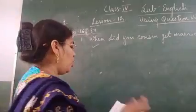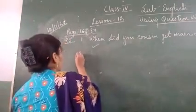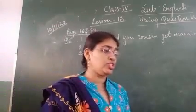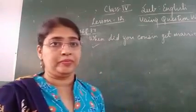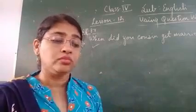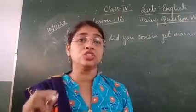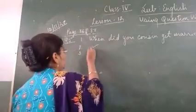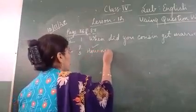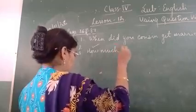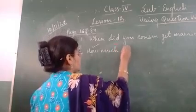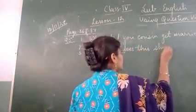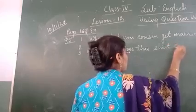Third one: 'How much this shirt cost?' This is wrong. The correct form is: 'How much does this shirt cost?'